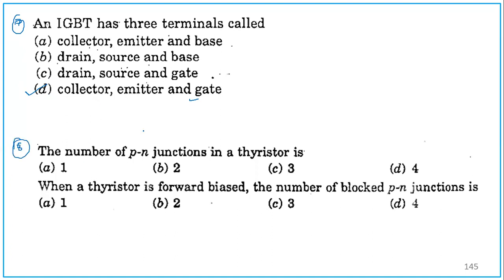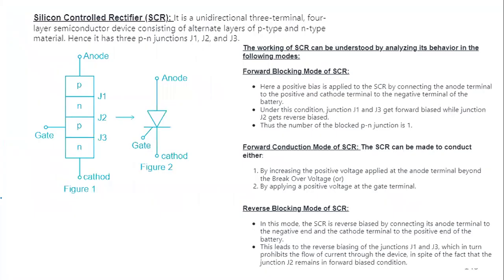Question number 8, the number of PN junctions in a thyristor. This question number 8 and 9 is very interesting. What is meant by silicon controlled rectifier? It has 3 PN junctions. SCR means PNPN. Junction 1, it has junction 1, junction 2, and junction 3. It has in total 3 junctions.